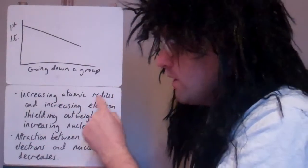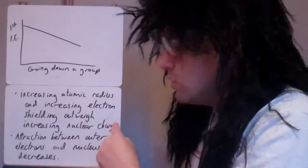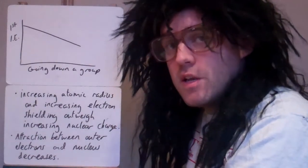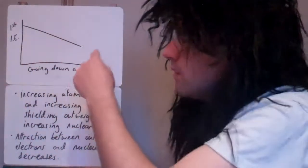And both these, the increasing atomic radius and the shielding, outweigh the fact that we're getting more protons. It outweighs the nuclear charge increasing. So overall, the attraction between the outer electrons and the nucleus decreases as you go down any group of the periodic table. So that's the pattern that you see there.